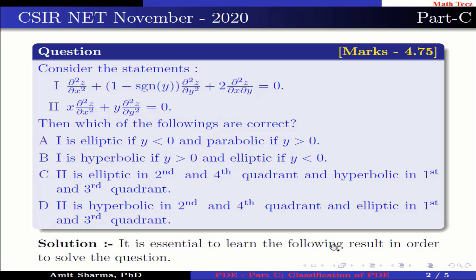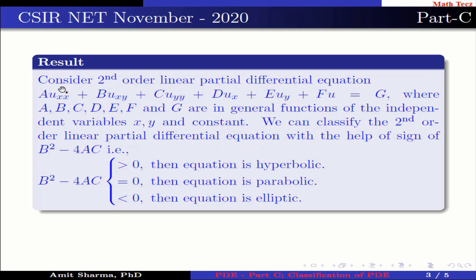It is essential to learn the following result in order to solve the question. For a second order linear PDE of the form A·u_xx + B·u_xy + C·u_yy + D·u_x + E·u_y + F·u = G, we classify it using the sign of B² − 4AC: if B² − 4AC > 0, the equation is hyperbolic; if equal to 0, it is parabolic; and if less than 0, it is elliptic.